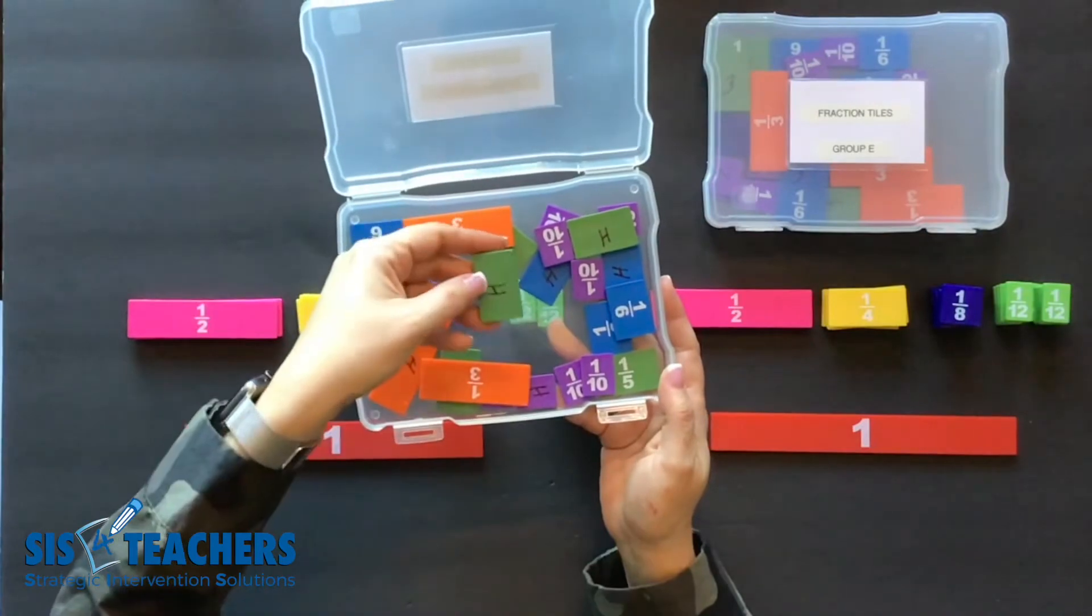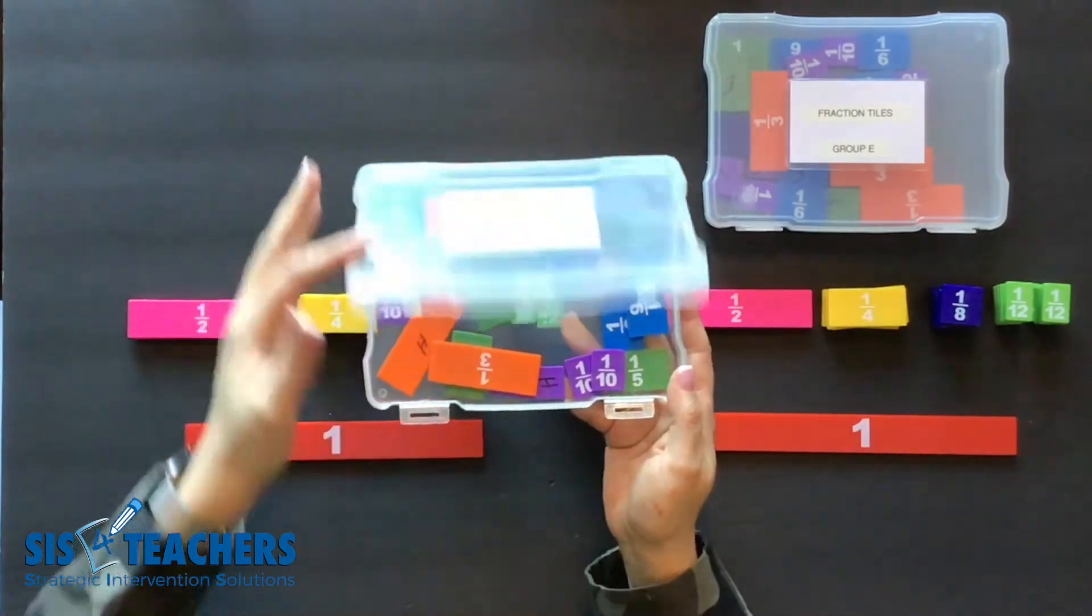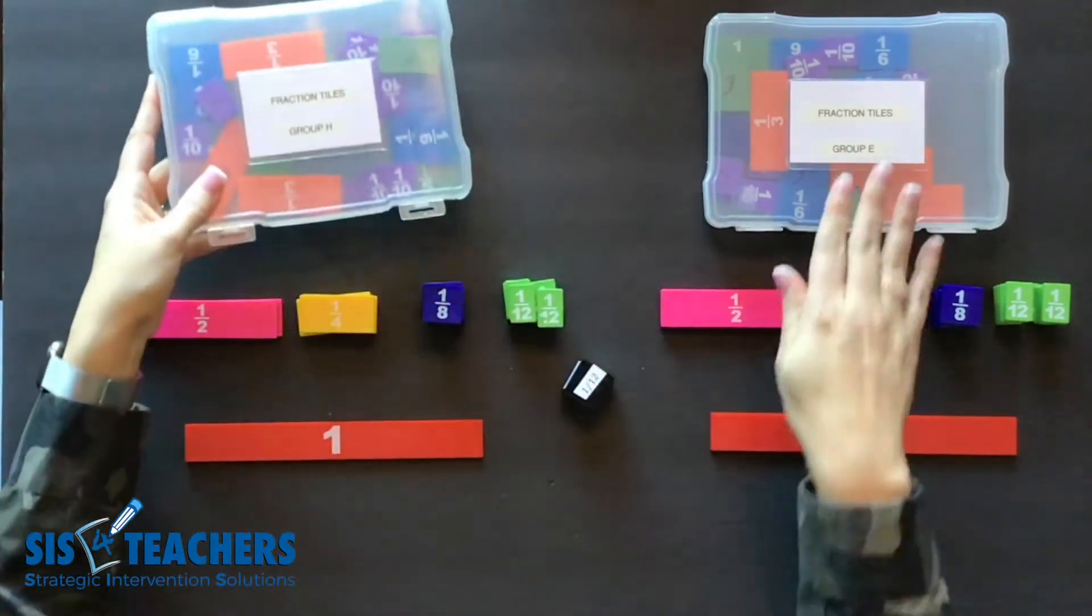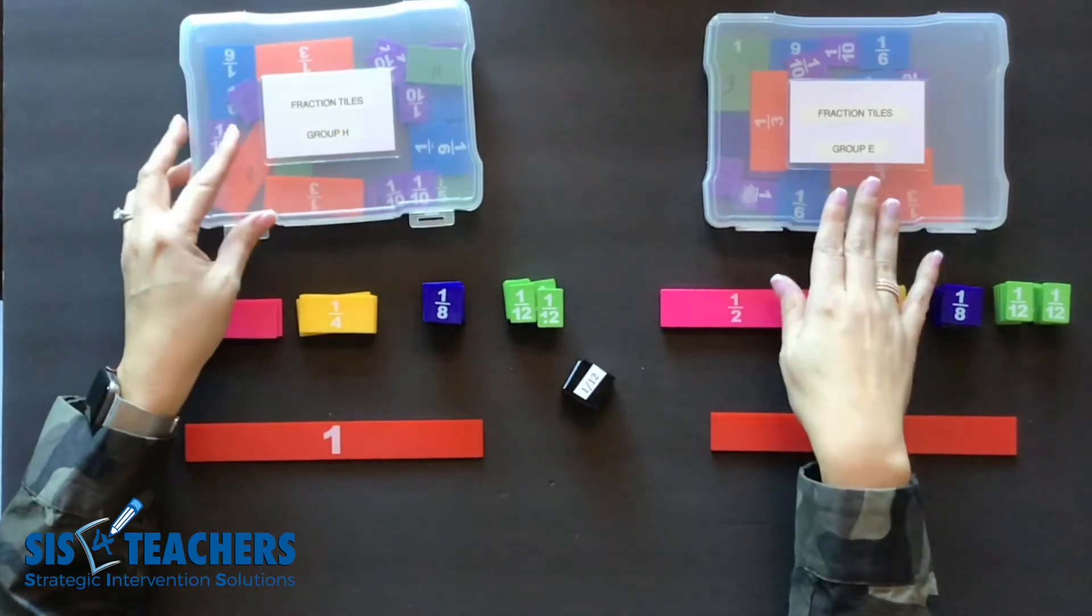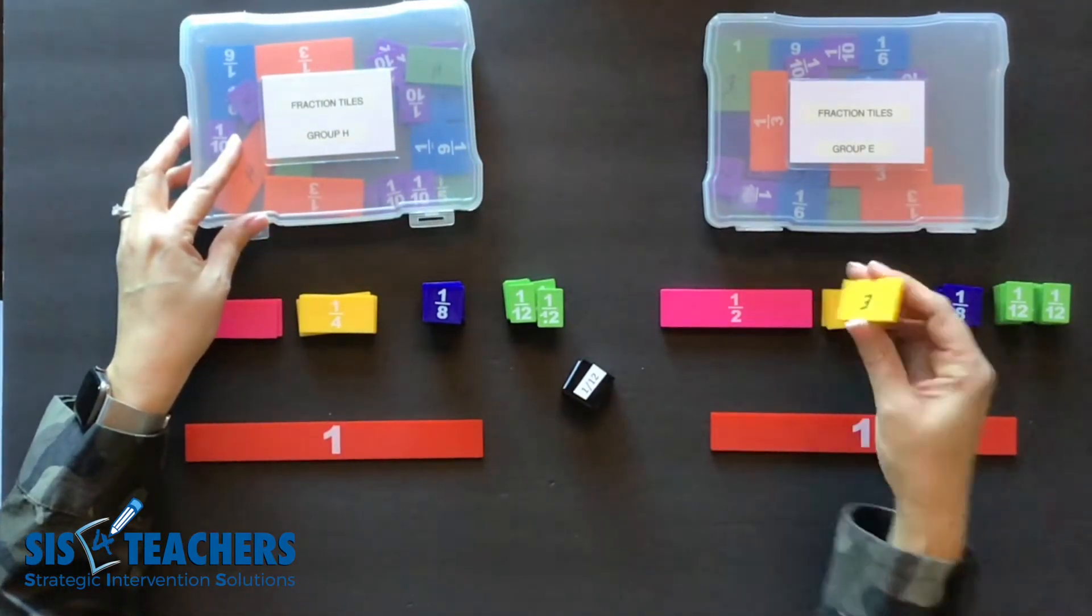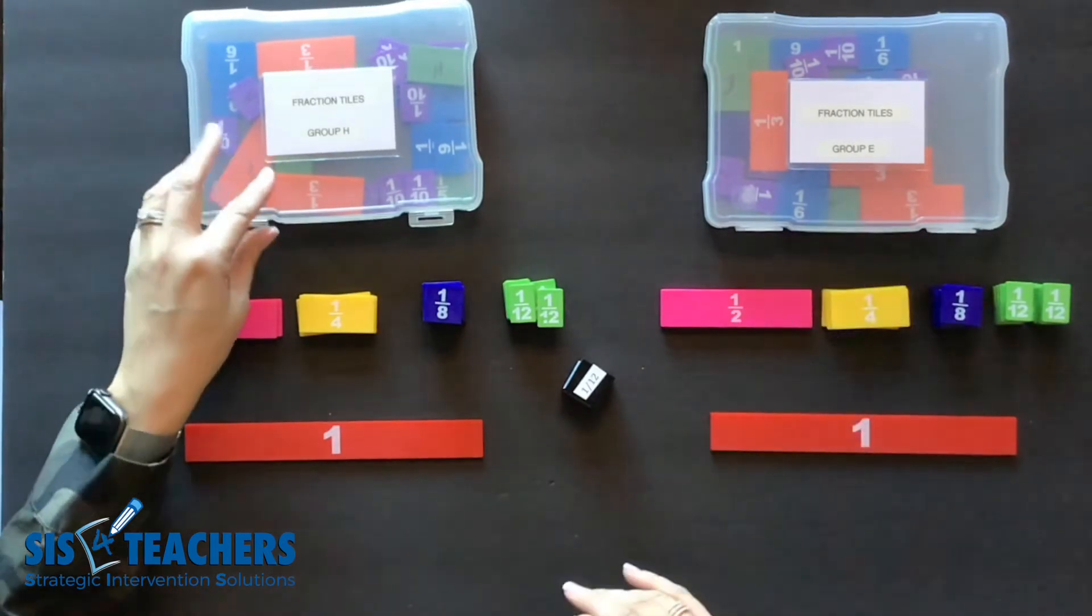This is a five by seven photo box. It's labeled H for my set because it goes with the H. My partner has her own set of Fraction Tiles. Hers are the group E. So if any of these drop we know that it goes back into her section.